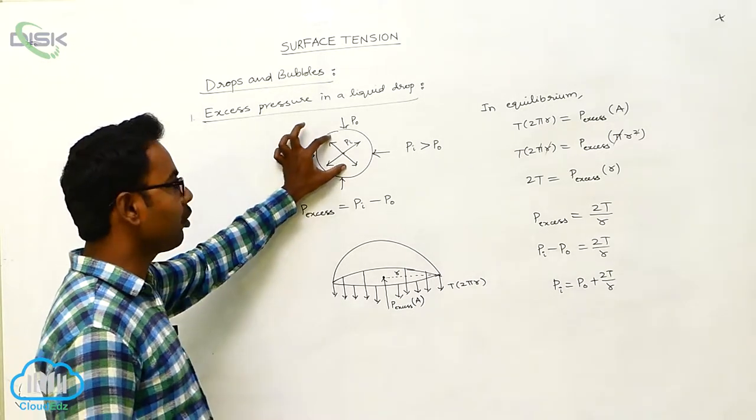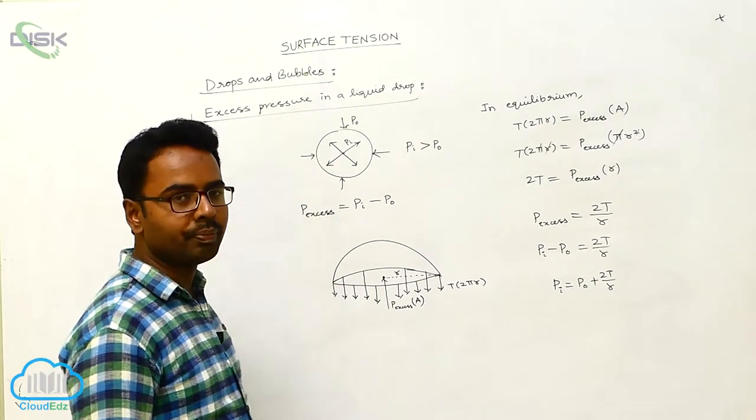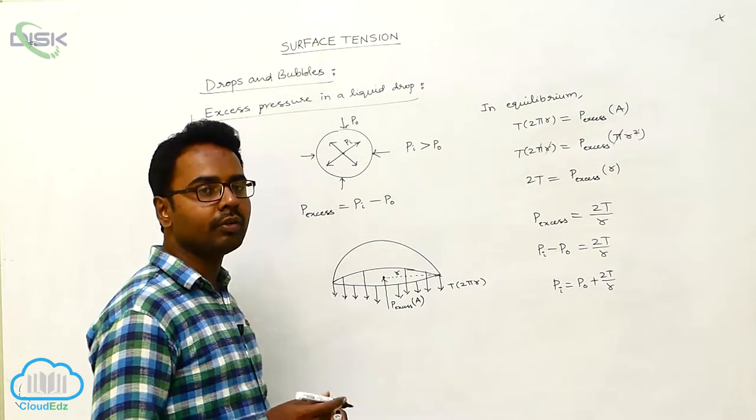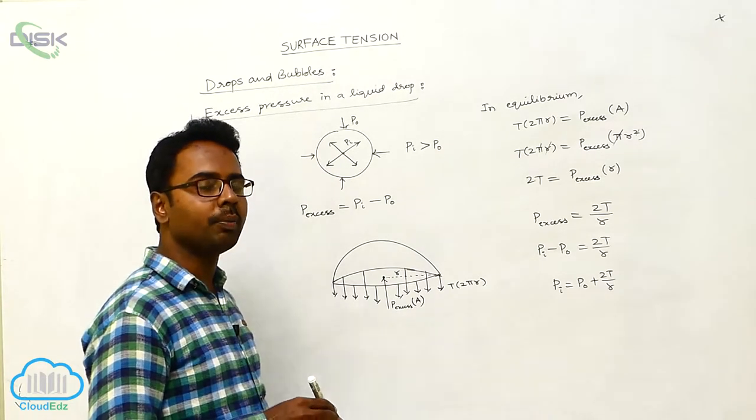Suppose this is the liquid drop. Every liquid drop is in a spherical shape due to the surface tension. Due to the surface tension, we know that every liquid drop tries to attain the minimum surface area.